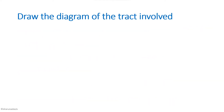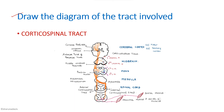The next question is to draw the diagram of the tract involved. Which tract is involved? Because the patient has paralysis, his motor system is affected. The fibers conveying information from the cortex to the muscles are affected — that is the corticospinal tract. You have to draw this diagram, and I will quickly show how to draw it in a step-by-step manner.